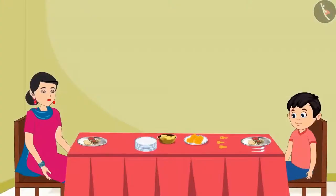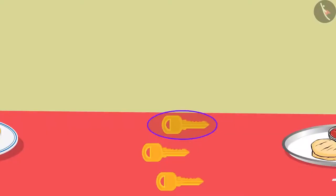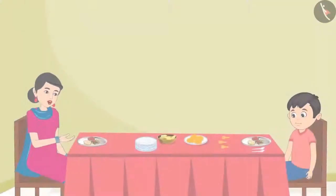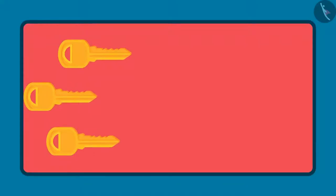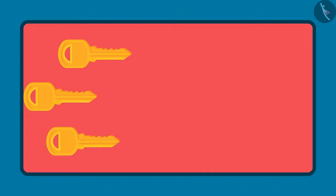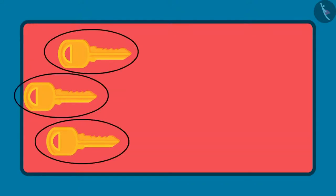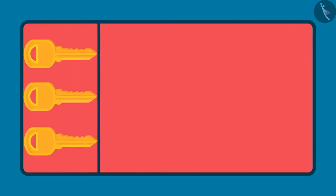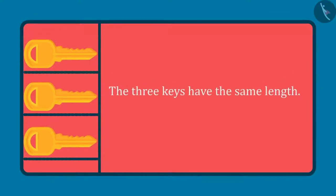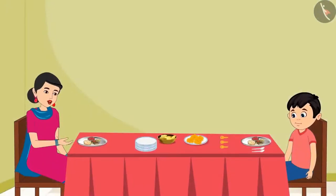Now see the three keys kept near you, Chotu. One is my room key, one is your room key and one is the house key. Can you tell me which of the three keys is the longest key and which key is the shortest key? By looking at them, it seems like this key is the longest and this key is the shortest. But before answering, I will keep all the three keys together so that one end of all the three keys is together.